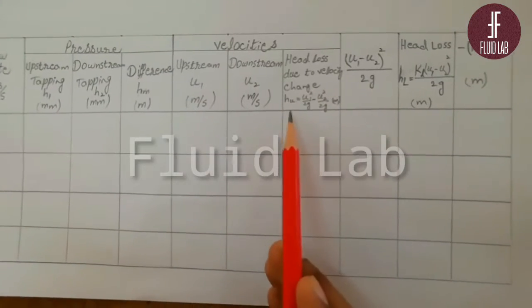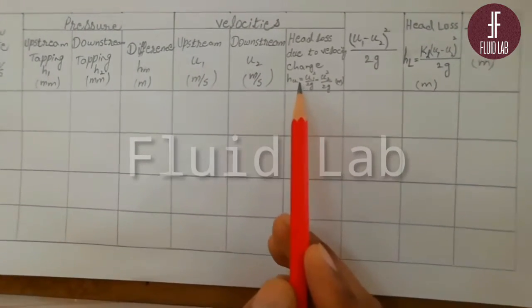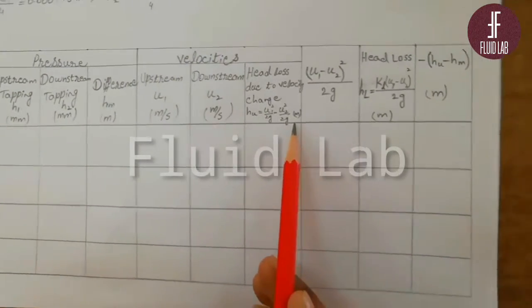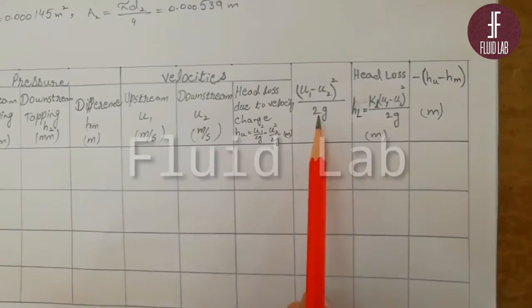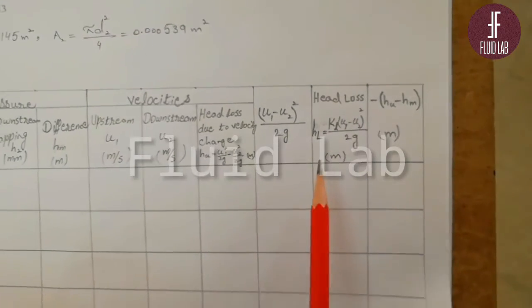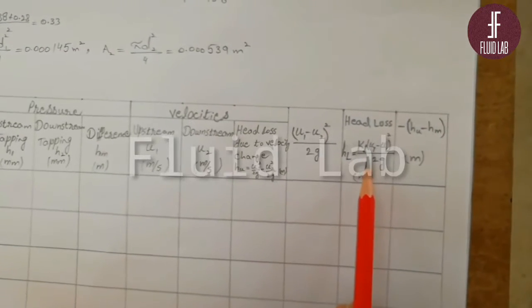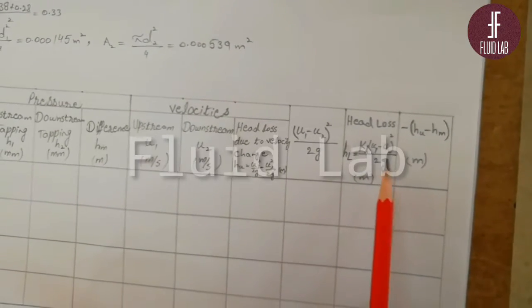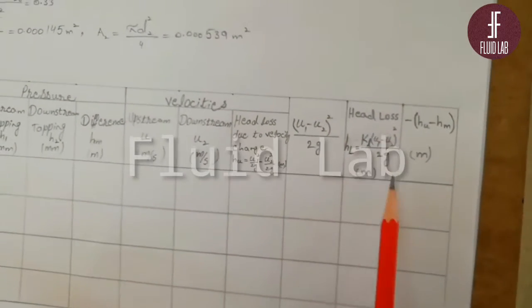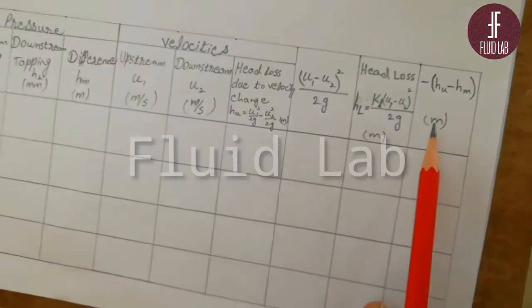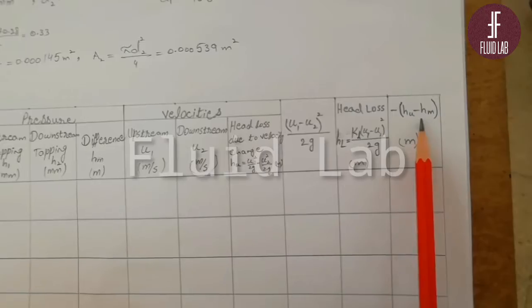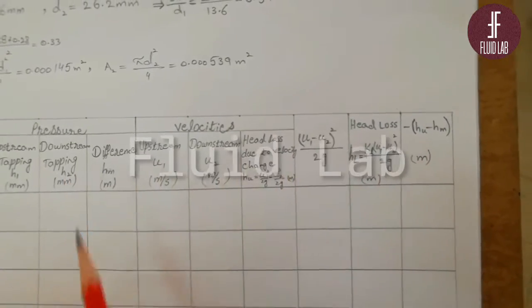The head loss due to velocity change, HU, equals U1 squared divided by 2G minus U2 squared divided by 2G in meters. Next column is the square of the velocity, the velocity head. The second last column is HL, our head loss, equal to KL times the square of difference of both velocities divided by 2G. The last column is the negative difference of head loss due to velocity and head loss due to pressure.